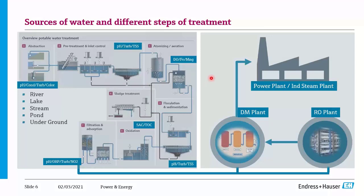How is water treated before feeding into the boiler? There are several treatment processes. For water from river, lake, stream, pond, or underground sources — the traditional treatment includes pre-treatment, aeration, flocculation and sedimentation, oxidation, filtration, and then it is pumped into the plant. When extracting water directly from the source, we need to know pH, conductivity, turbidity, and color — without measuring these basic four parameters, we cannot control the treatment at the inlet.